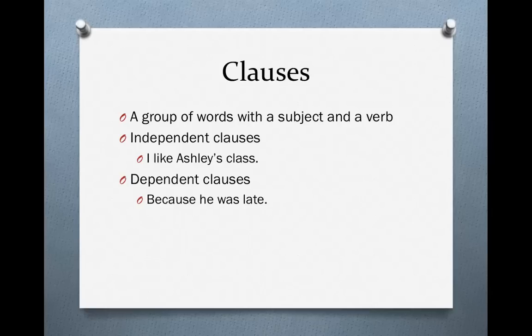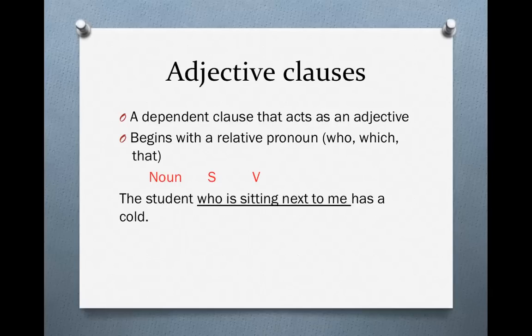Today I am going to tell you about a particular kind of dependent clause known as an adjective clause. An adjective clause is a dependent clause that acts as an adjective. So it's a group of words with a subject and a verb that collectively act as an adjective. Adjective clauses begin with relative pronouns. The most common relative pronouns are who, which, and that.